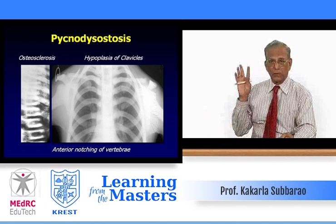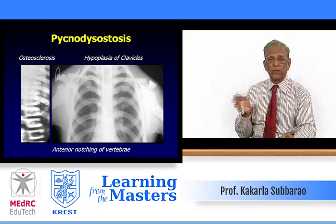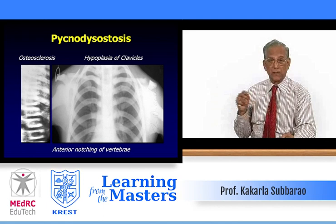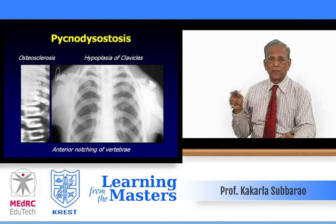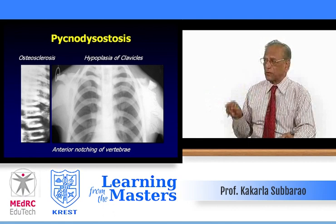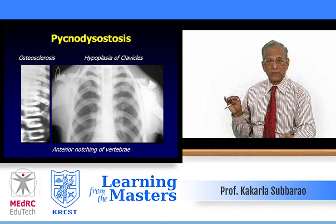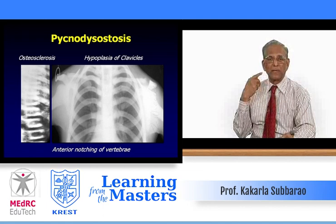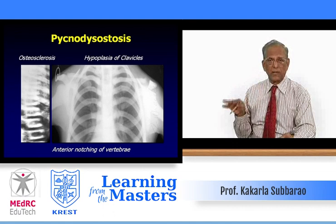In pycnodysostosis there is also diffuse sclerosis. How do you differentiate it from marble bone disease? There are three distinguishing features: hypoplasia of the clavicles (not seen in marble bone disease), anterior notching of the vertebrae specific to pycnodysostosis, and an obtuse angle of the mandible. Pycnodysostosis is considered a hybrid between osteopetrosis and cranio-cleido-dysostosis — sharing diffuse bone sclerosis with osteopetrosis and clavicular dysplasia with cranio-cleido-dysostosis, where the clavicles may be completely or segmentally absent.